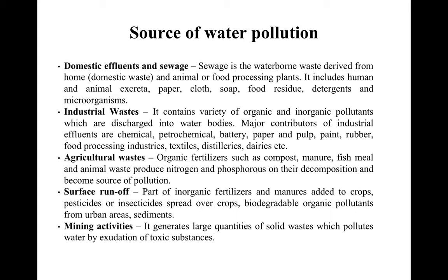Water pollution can be caused by many anthropogenic sources. First is domestic effluents and sewage. Sewage is the waterborne waste derived from homes, domestic sources, and animal or food processing plants. These pollutants include human and animal excreta, paper, clothes, food residue, detergents, and a large number of microorganisms. This type of pollutant is also known as municipal waste and is an inevitable fallout of urbanization.